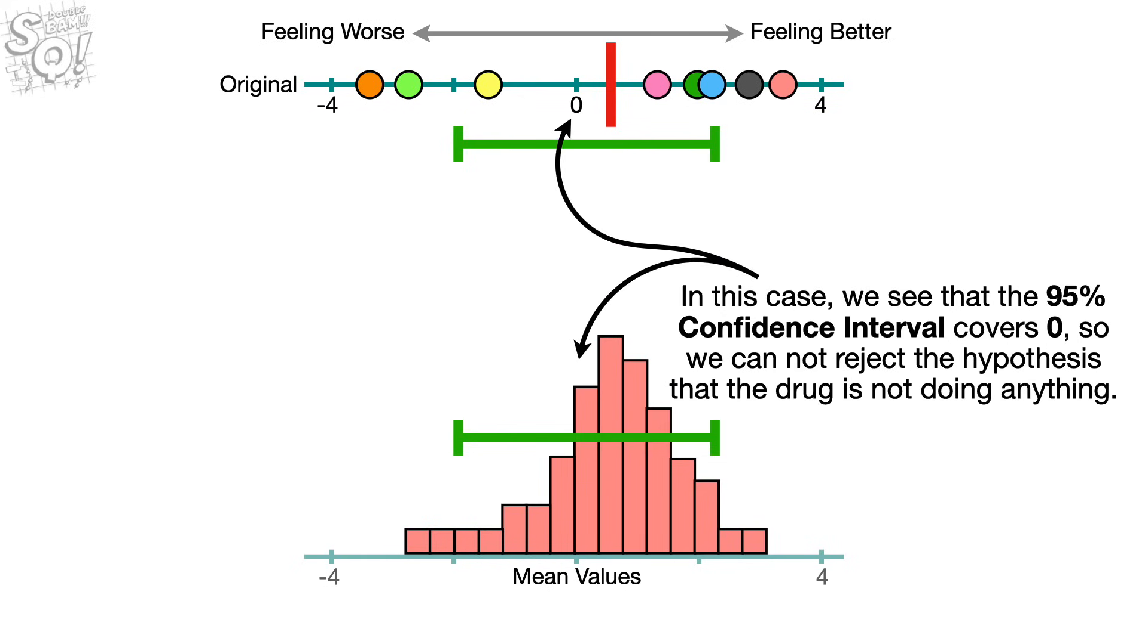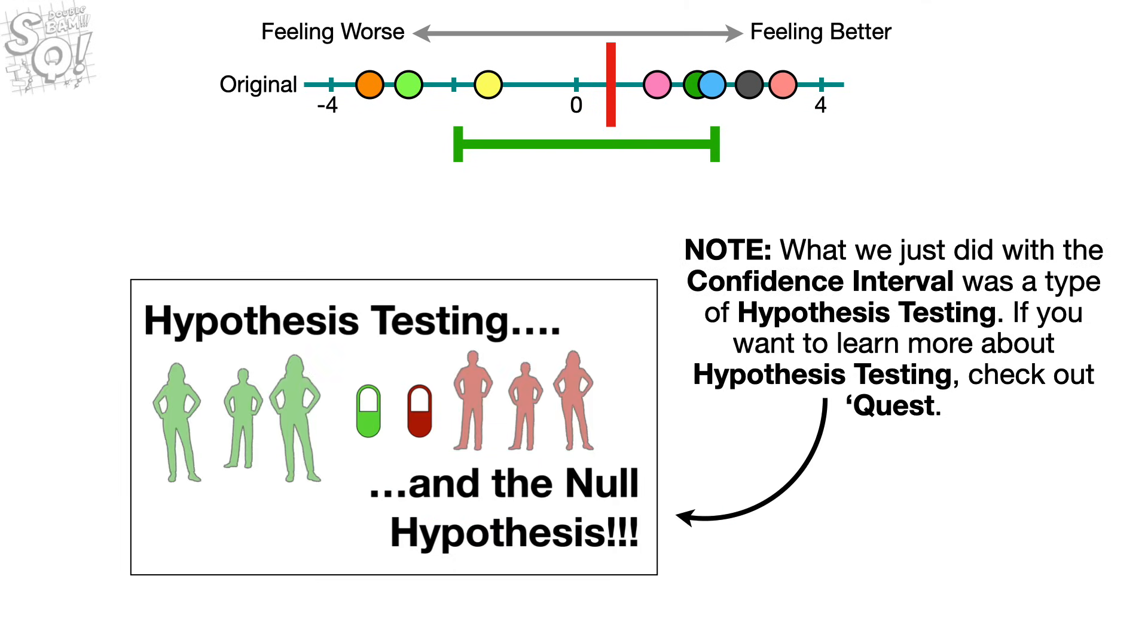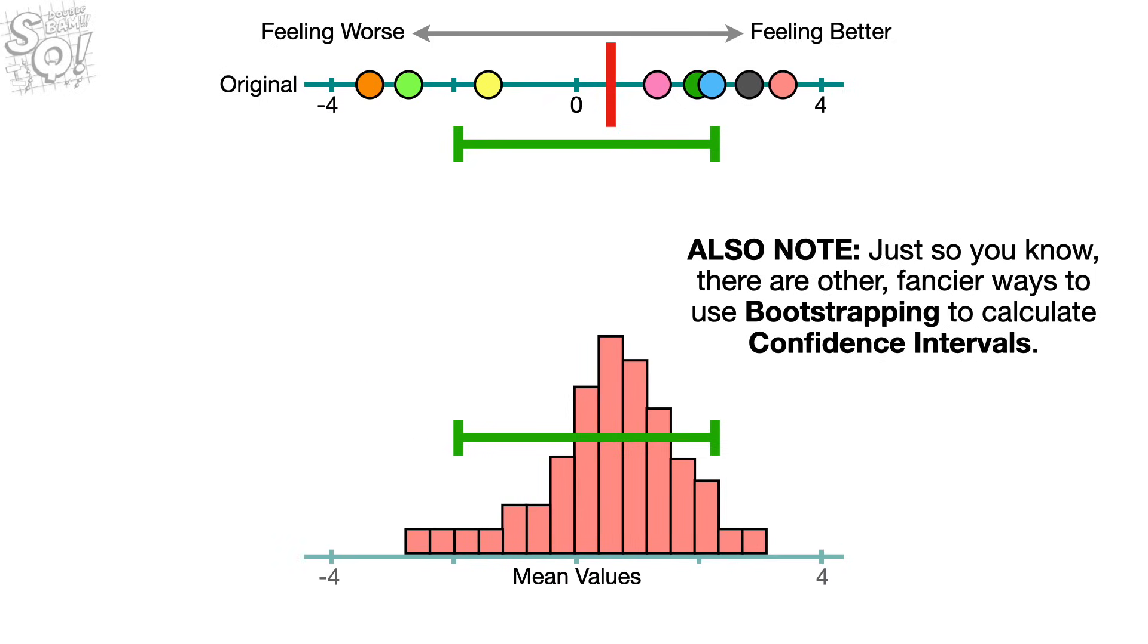Double bam! In this case, we see that the 95% confidence interval covers 0, so we cannot reject the hypothesis that the drug is not doing anything. Note, what we just did with the confidence interval was a type of hypothesis testing. If you want to learn more about hypothesis testing, check out the quest.